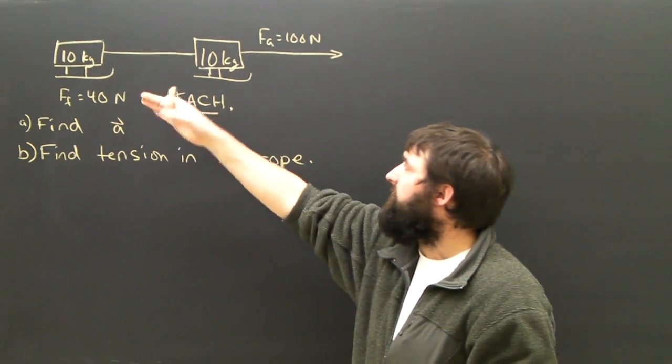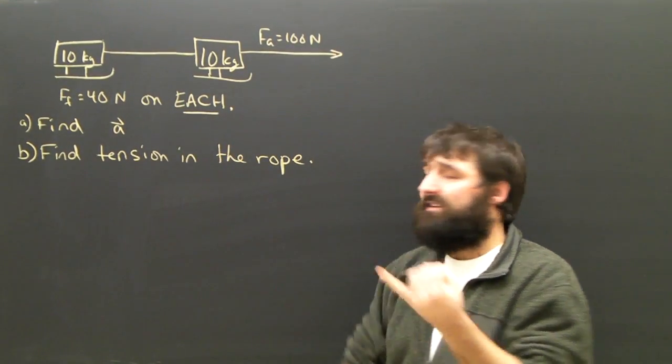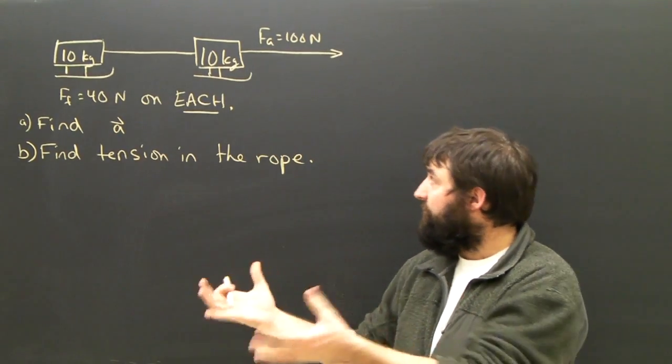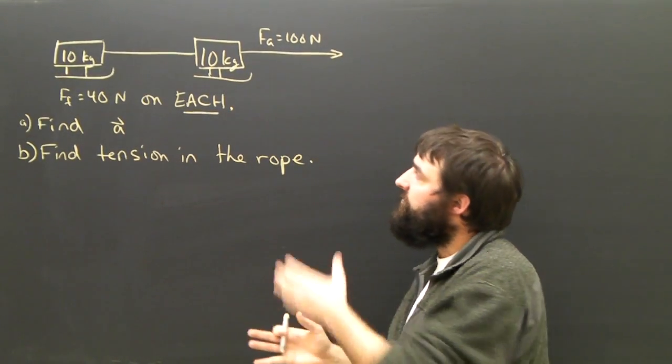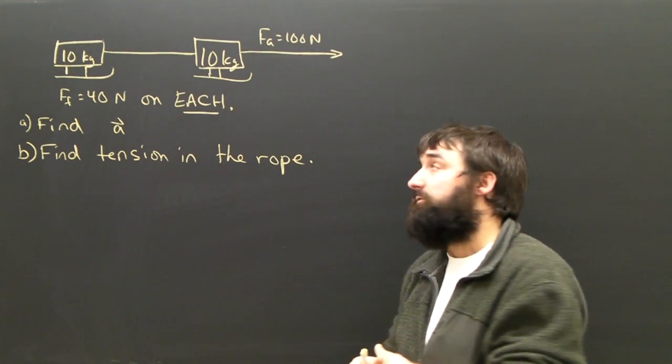There's 40 newtons of friction on each sled, and the question asks us: A, find the acceleration of the whole train, and B, find the tension in the rope, the one that connects the two sleds.